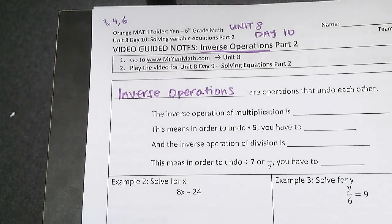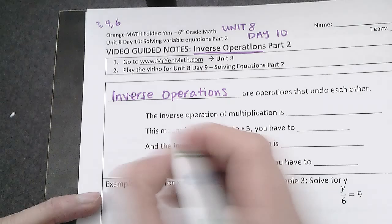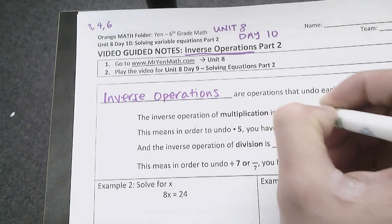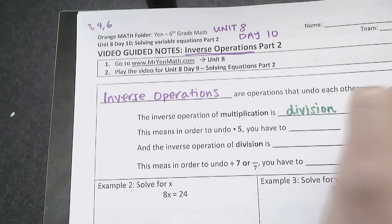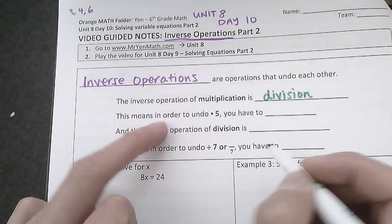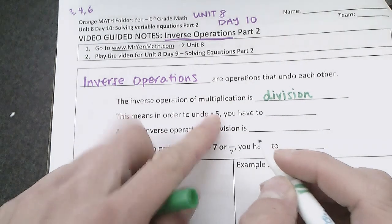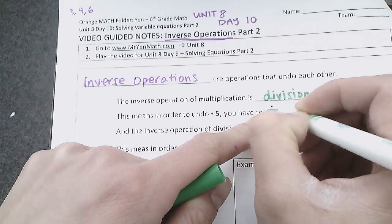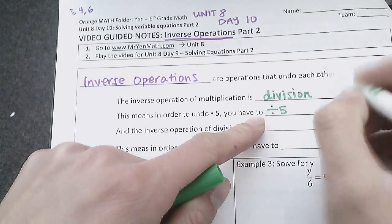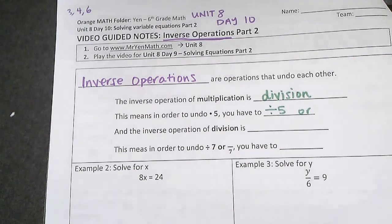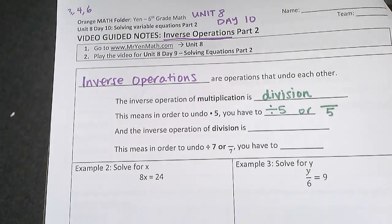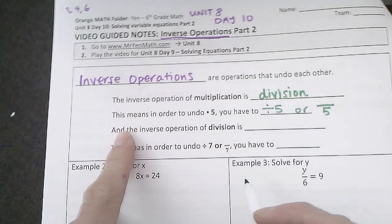Today we're talking about multiplication and division. The inverse operation of multiplication is division—that's the opposite of multiplication. So in order to undo multiplying by 5, you have to divide by 5. Or another way of writing dividing by 5 is if you have it in the denominator, over 5—those are the same thing.